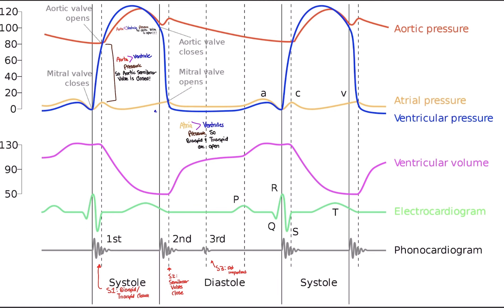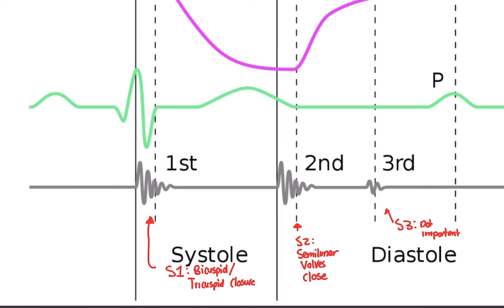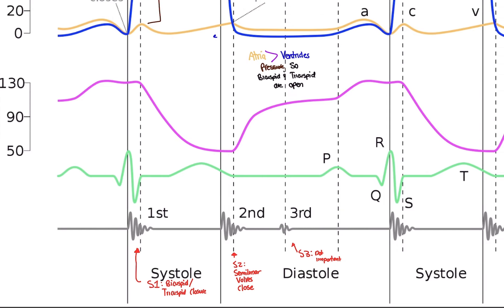Let's start with the phonocardiogram. You don't really need to know it, but let's go over it quickly — it's not officially part of the Wiggers diagram, but why not? A phonocardiogram is basically a machine that listens to your heart. The first sound it detects is called S1, which is the sound of the bicuspid and tricuspid valves — the AV valves between the atria and ventricles — closing. S2 is the semilunar valves closing: the pulmonary semilunar and aortic semilunar valves.